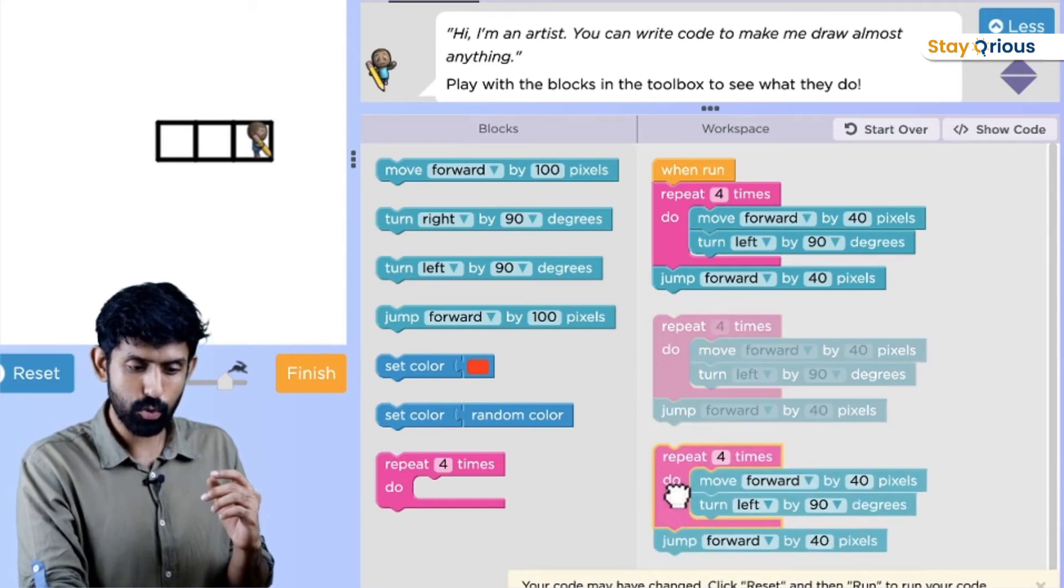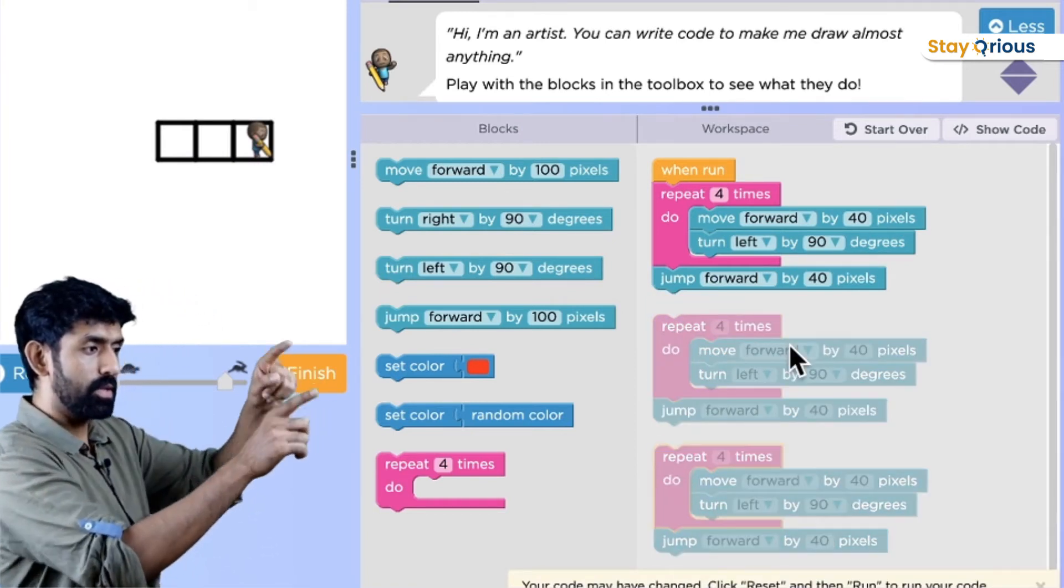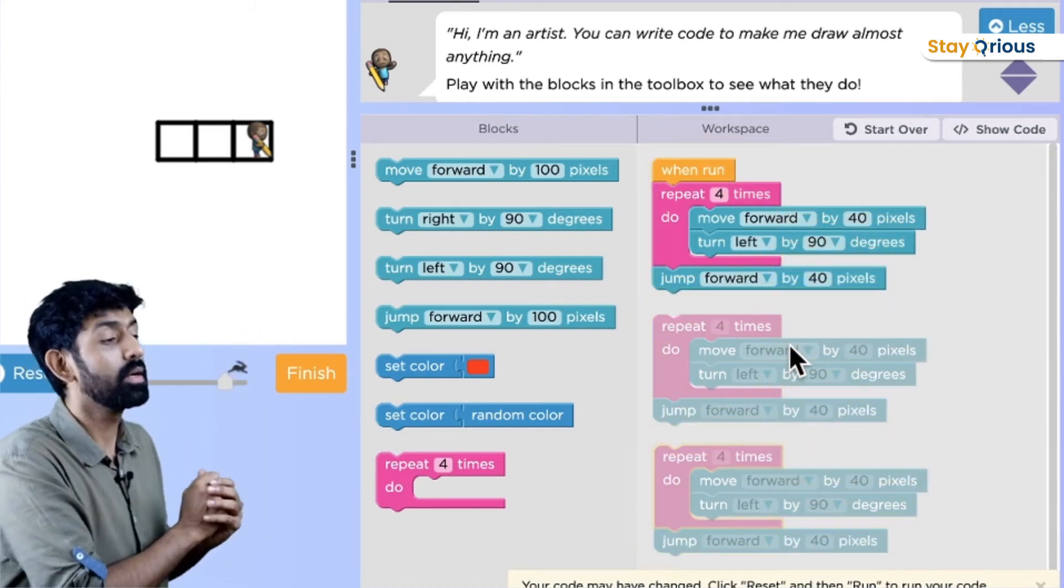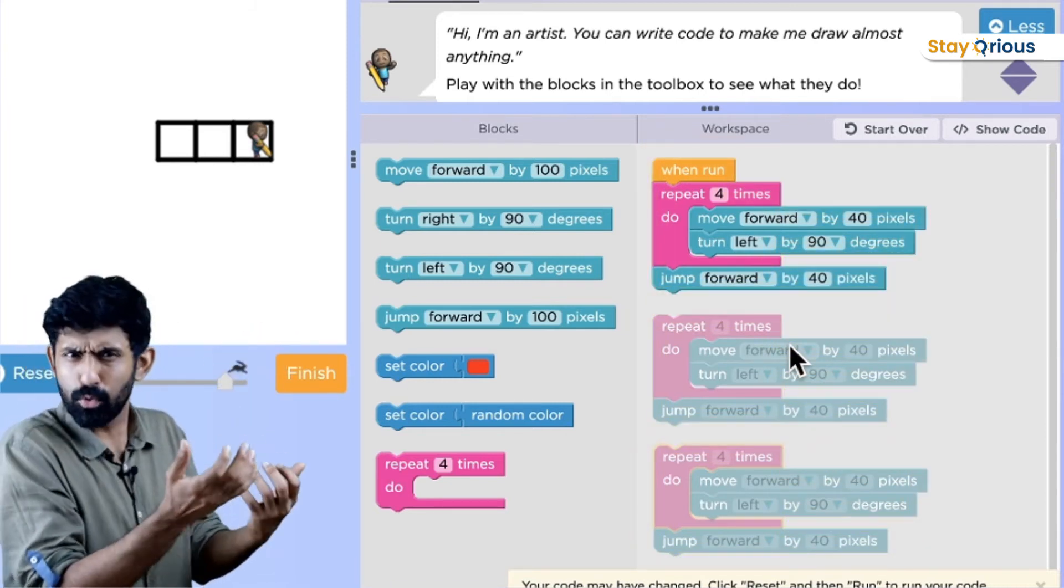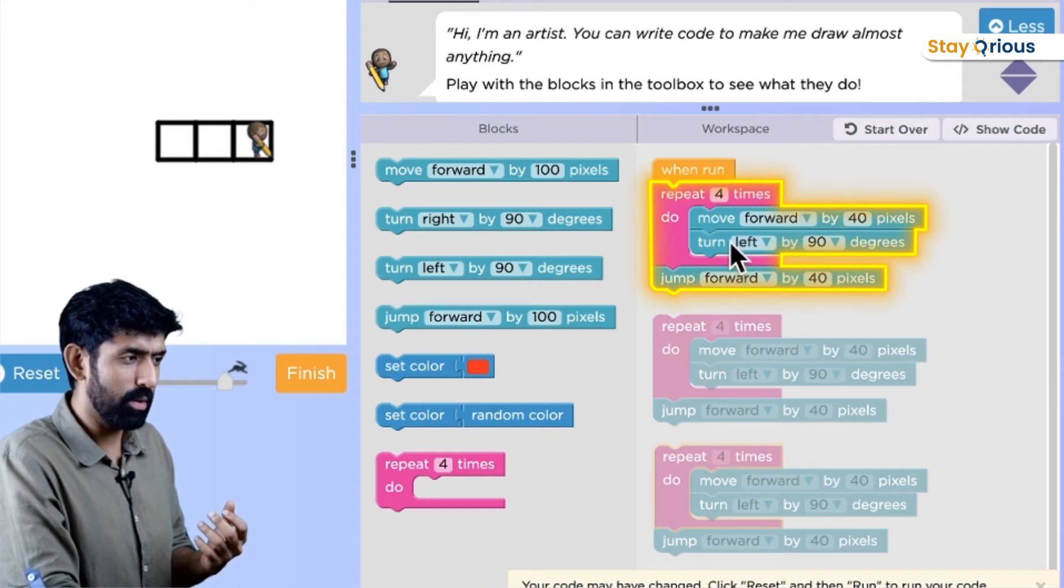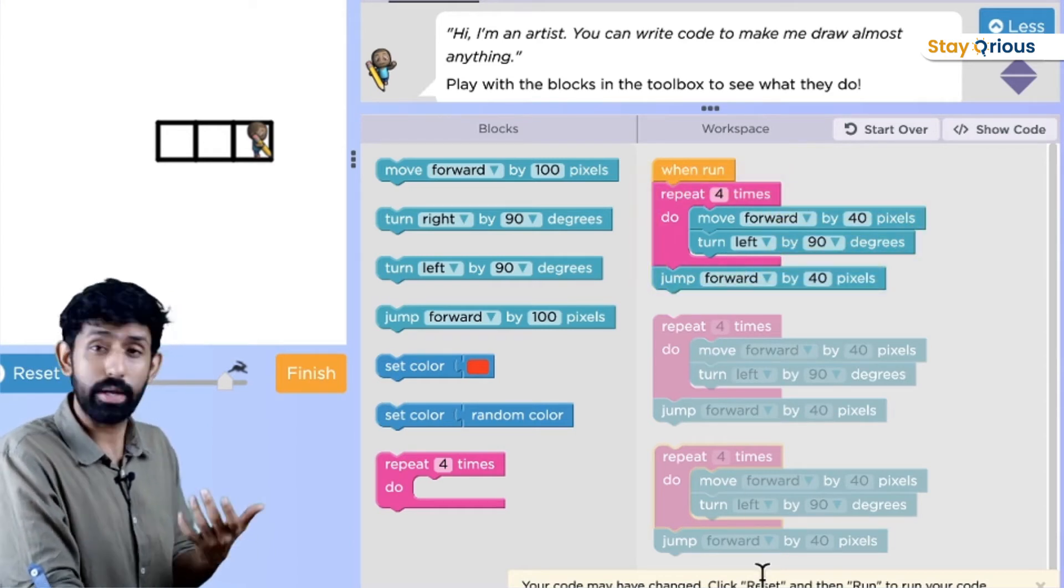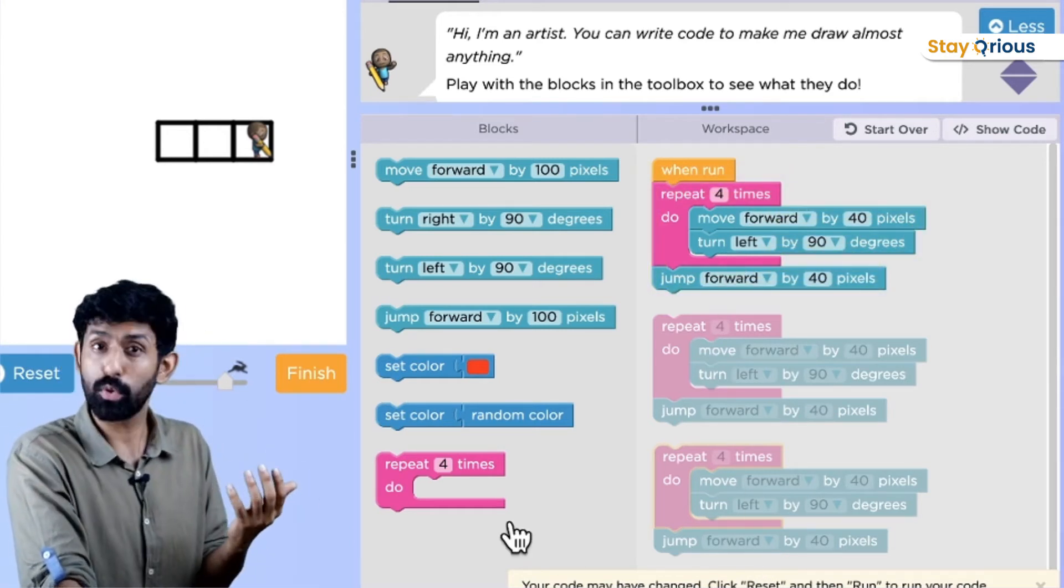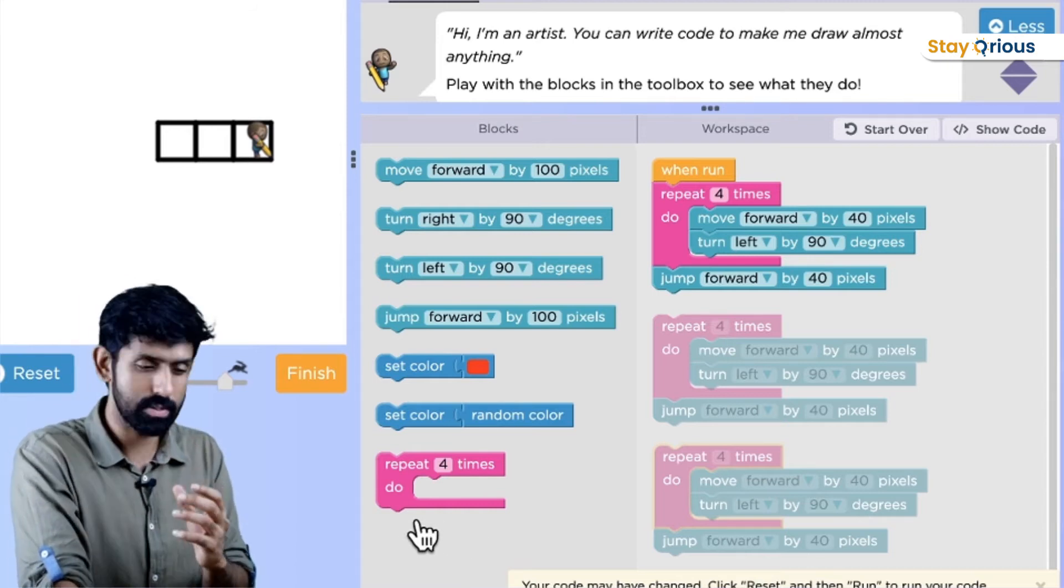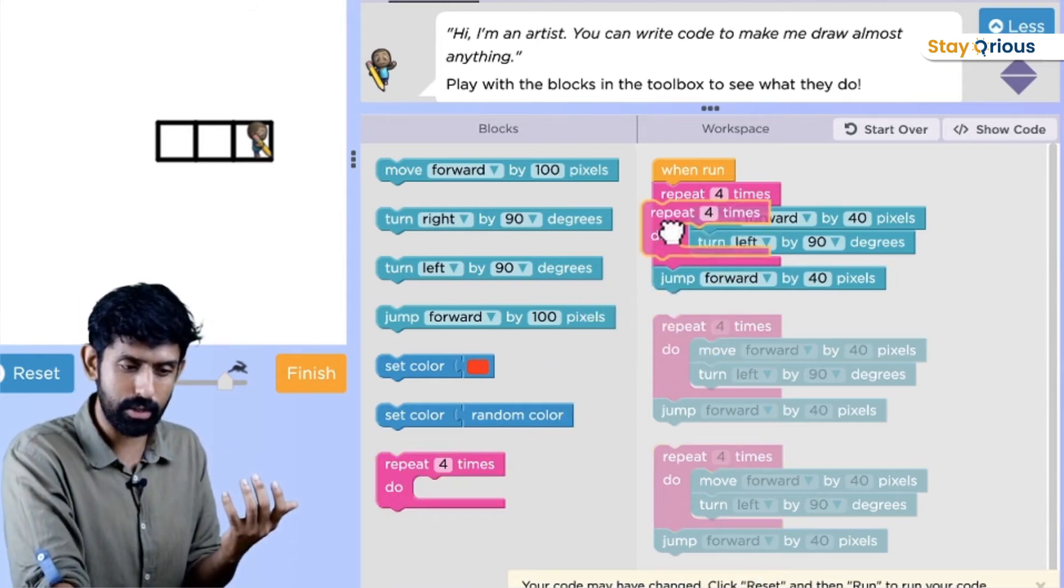So how many times have I done this? Three times. So to draw three squares, I have three of those pieces of code repeating again and again. But that itself has a repeat. You take this piece of code and repeat that three times, I can draw three squares. So what do I do now? Whenever I catch something like this, all I have to do is put that whole thing inside a repeat.